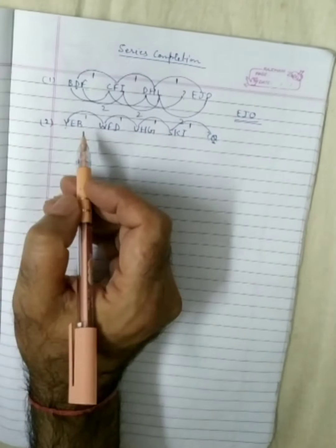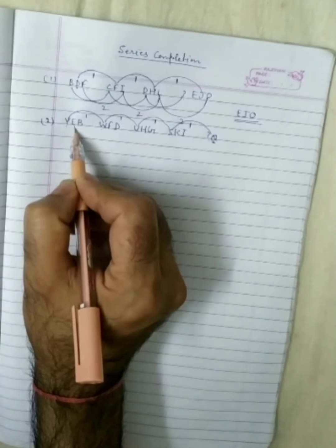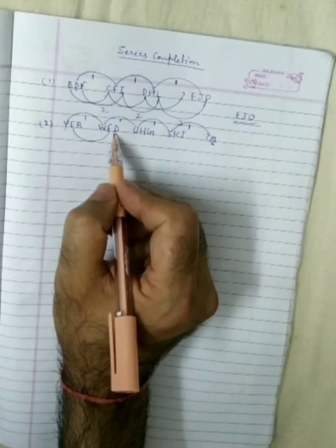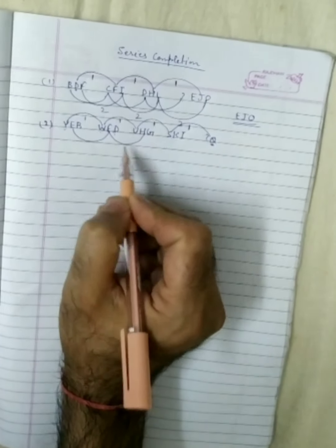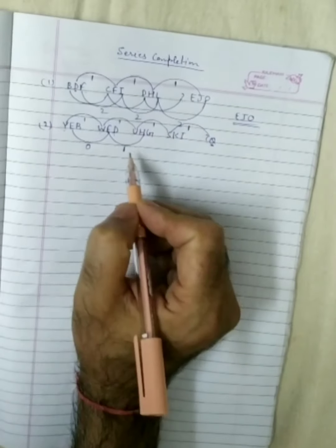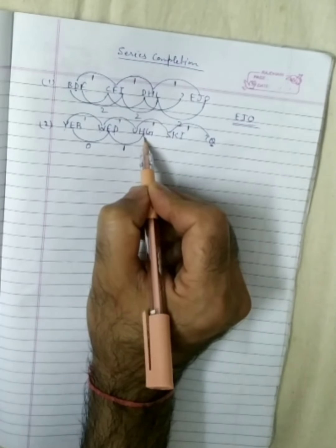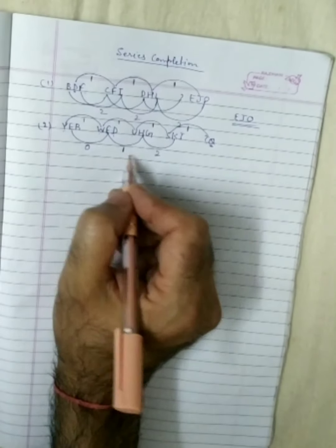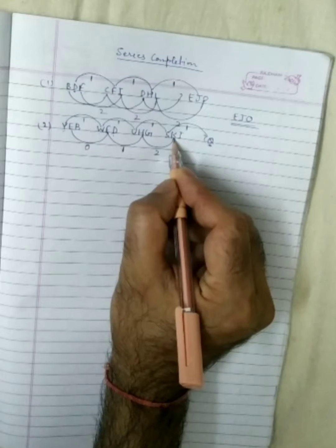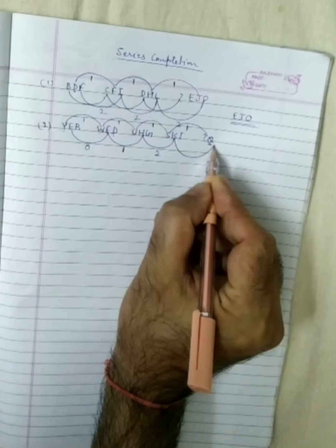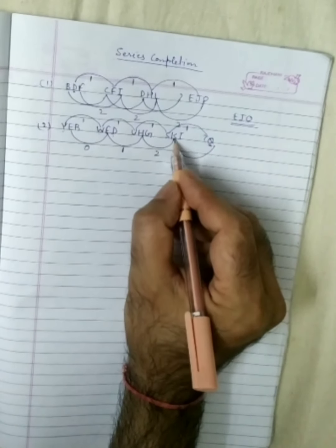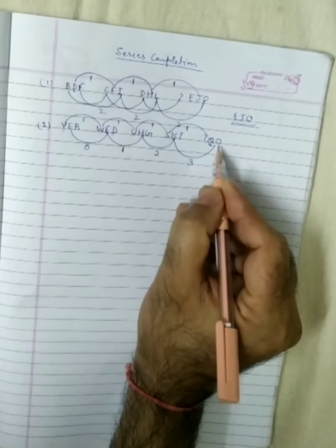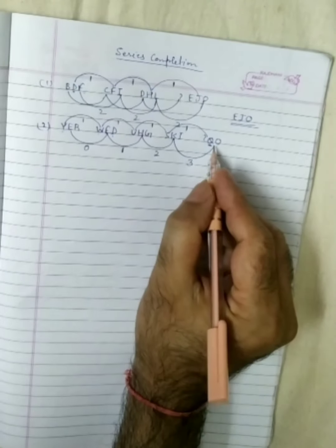Now we take the second letter: E to F — no letter gap. F to H — no gap directly, then H to K — the pattern is zero, one, two gaps increasing. So after K, with three letters gap: K, L, M, N, O. The second letter of the missing term is O.